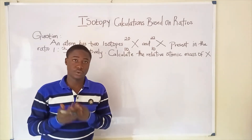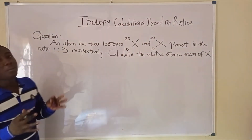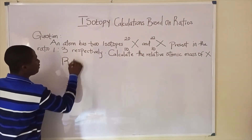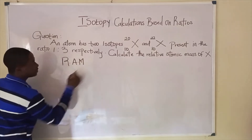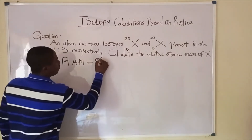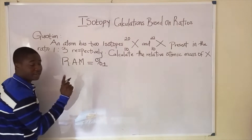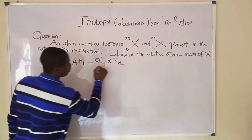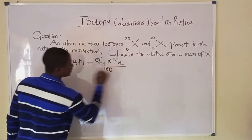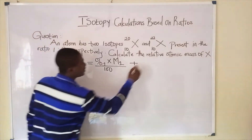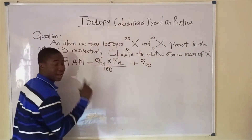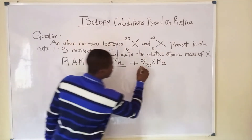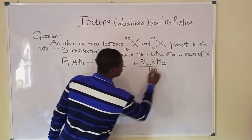You can see the question written on the board. The formula for solving isotopy is: Relative Atomic Mass of the element equals the percentage abundance of the first isotope times the mass number of the first isotope over 100, plus the percentage abundance of the second isotope times the mass number of the second isotope over 100.